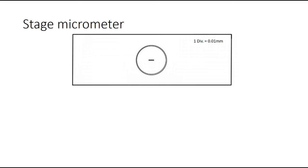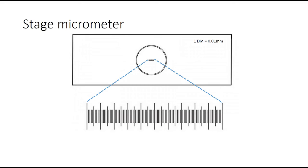Before calculating, I need to familiarize you with what a stage micrometer actually is. Here's a picture of what a typical stage micrometer looks like — it's basically a microscope slide that has a small ruler etched into it. This slide is then placed on the microscope stage just like any other microscope slide. If I enlarge the image of the ruler, you should notice that it consists of many vertical lines, which I call division markers, because it's the spaces in between these lines that are called divisions.